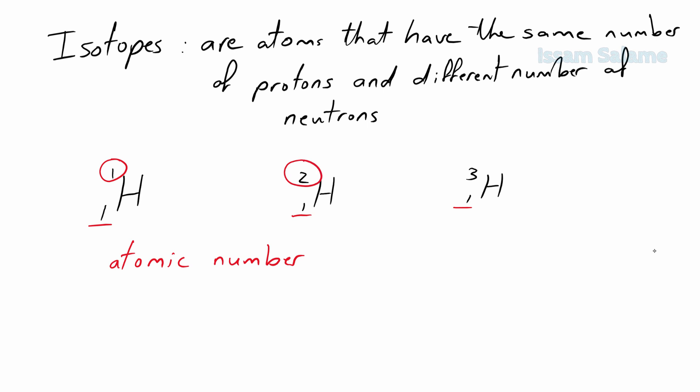And since they have different number of neutrons, that's why they have different mass numbers. As we can see, the first one has a mass number equal to one, the second equal to two, and the third one, it's equal to three.